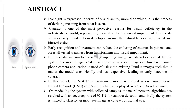Eyesight is expressed in terms of visual acuity — it is the process of deriving meaning from what is seen. Cataract is one of the most pervasive reasons for visual deficiency in the industrialized world, representing more than half of visual impairment. It is a state when a densely clouded form develops around the natural lens, causing partial and blurred vision. Early recognition and treatment can lessen the suffering of cataract patients and prevent visual weakness from transforming into visual impairment. This study aims to classify the input eye image as cataract or normal.